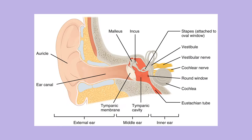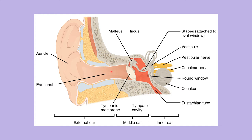The external ear is what you see outside the body. The outer portion is known as the auricle, also called the pinna. The auditory canal — or ear canal — should not have things stuck in it, as cells naturally produce wax that is supposed to flow out on its own. The external ear extends from outside the body all the way to the tympanic membrane, which is your eardrum.